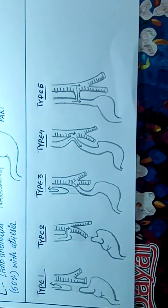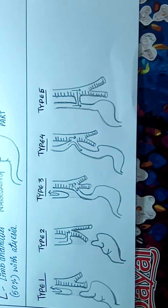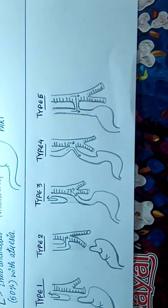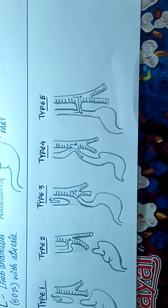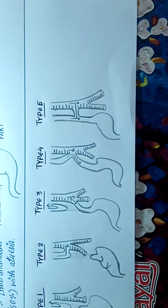In the third type, the proximal part is forming a blind sac and the distal part is connected to the trachea. In fourth type, the proximal and the distal end is connected to the trachea.